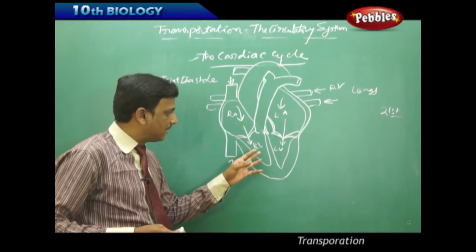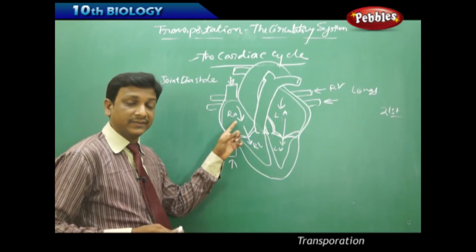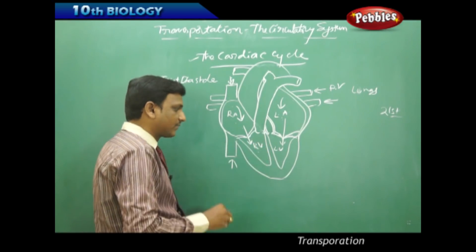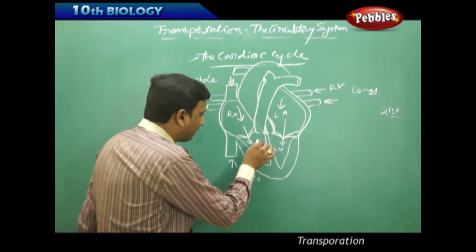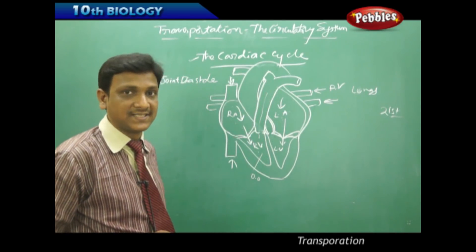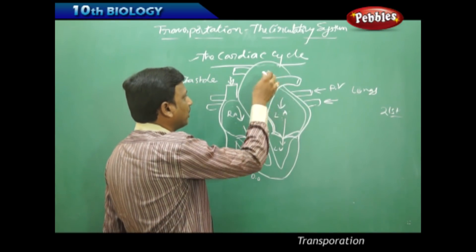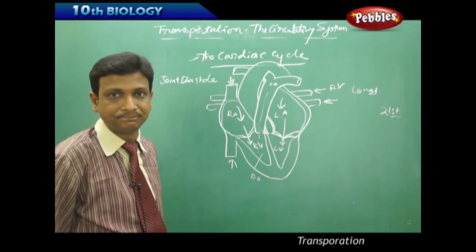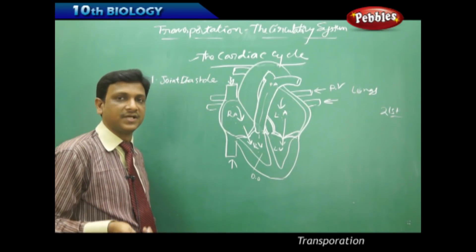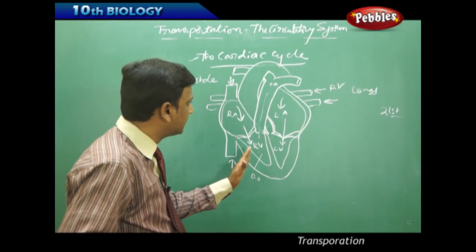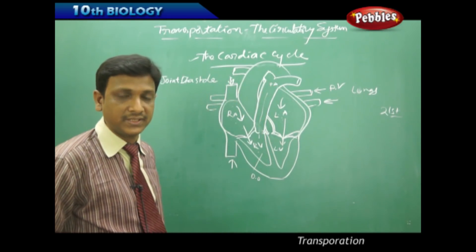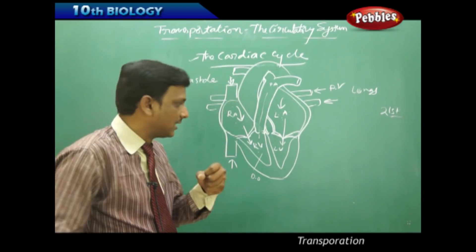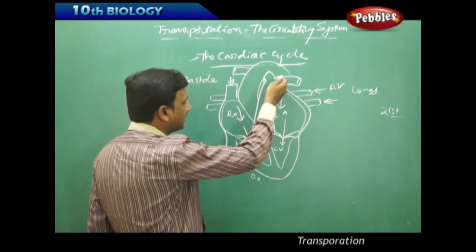From the ventricle, blood cannot flow back to the atria, so it is pumped into the other blood vessels. The right ventricle, which contains deoxygenated blood, pumps it into the pulmonary artery. The pulmonary artery branches into two, with each branch going to the lungs for oxygenation. So during ventricular systole, deoxygenated blood from the right ventricle is carried to the lungs through the pulmonary artery.